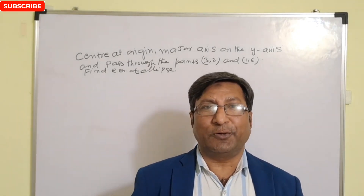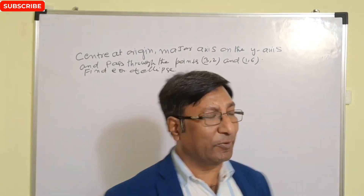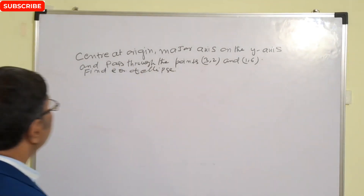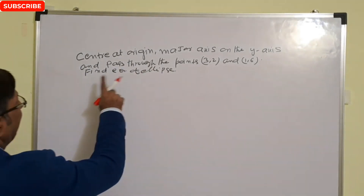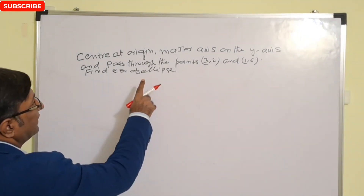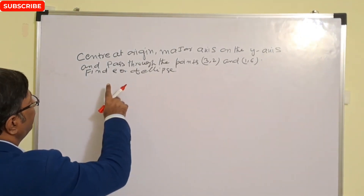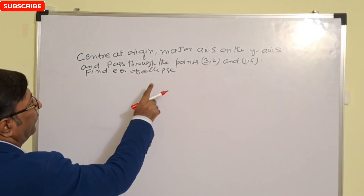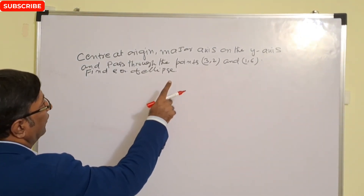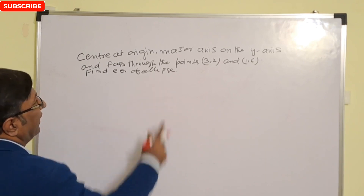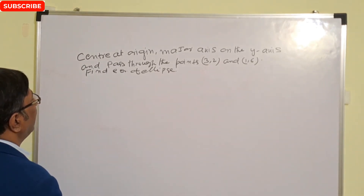Most important question of ellipse. The question is: center at origin, major axis on the y-axis, and passes through the points (3, 2) and (1, 6). Find the equation of the ellipse.